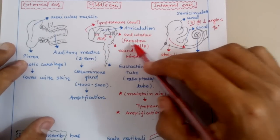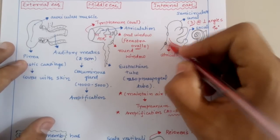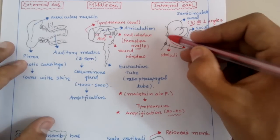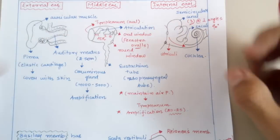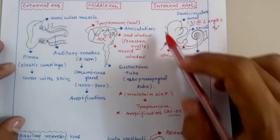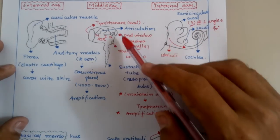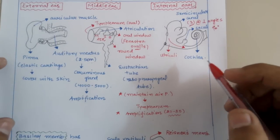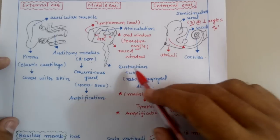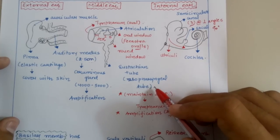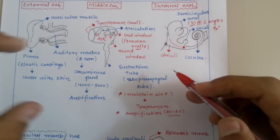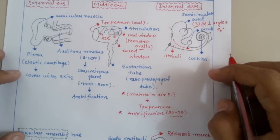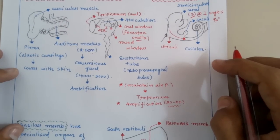There are two small windows in the middle ear: the oval window, also known as fenestra ovalis, which is oval in shape, and the round window, which is circular in shape. There is also an extension from the middle ear reaching the throat or pharynx region, known as the Eustachian tube or nasopharyngeal tube, because it joins the middle ear to the pharynx region.